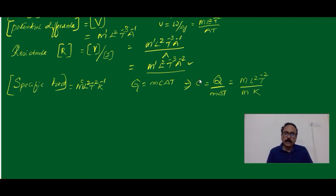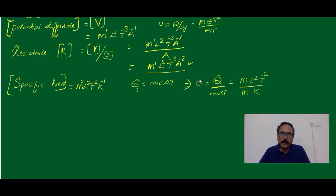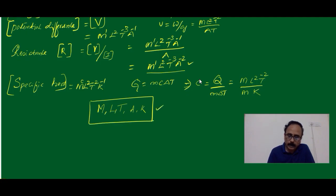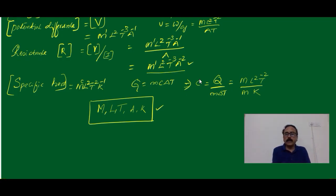So like this, if you know the formula for any physical quantity, you can express them in the dimensional formula. In all these dimensions, we have written mass, length, time, current and then temperature. So these are the terms which we have used to express the dimensional formula of any physical quantity.